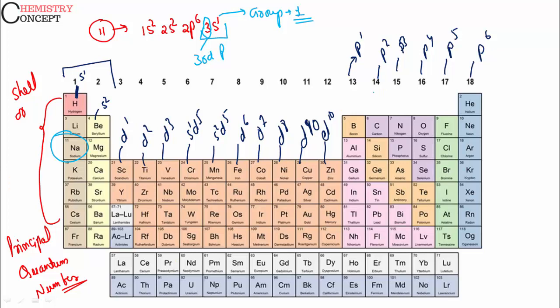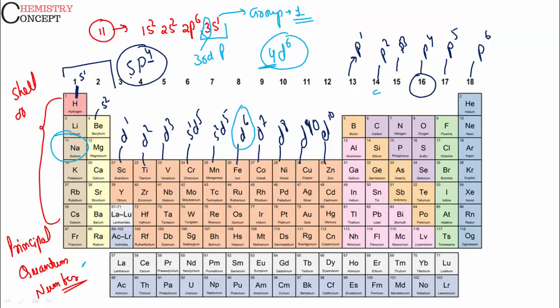In the same way, if an element's electronic configuration ends in 4d6, the principal quantum number is 4, so it belongs to the fourth period. D6 means it is in group 8. That element is iron. Similarly, if the final configuration is 5p4, then because it is P4 it belongs to group 16, and because the principal quantum number is 5 it belongs to the fifth period. That element is tellurium. The position in the periodic table is entirely determined by electronic configuration.